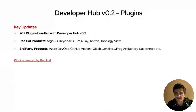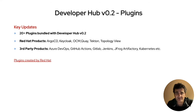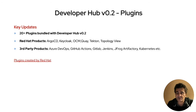Let's talk about Red Hat Developer Hub plugins. We just announced the release of Developer Hub version 0.2 in September — our last release before GA. In this release, more than 20 plugins are now bundled with Developer Hub. As soon as you install the product, you'll get these plugins right away in the catalog and can start using them. These plugins cover various Red Hat products like ELog, Tekton, the Topology View, and OpenShift, as well as plugins from third-party companies for products like Azure DevOps, GitHub Actions, and JFrog Artifactory for storing container images.